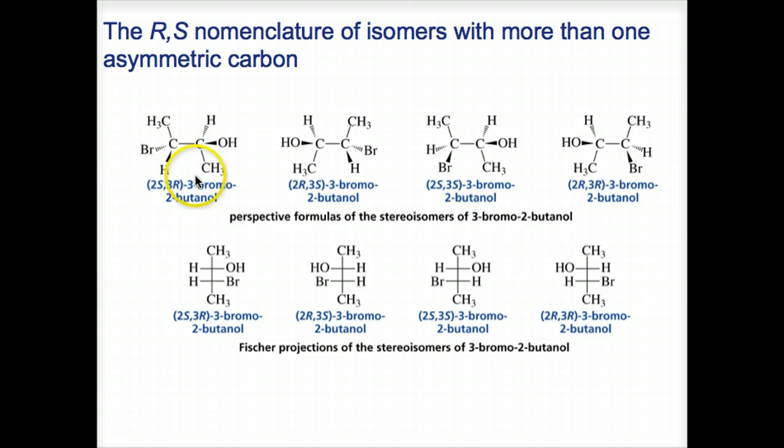This 2S means that this number 2 carbon has S configuration. Number 3 has R configuration. We need to look at each of these asymmetric carbons separately in order to assign its configuration.